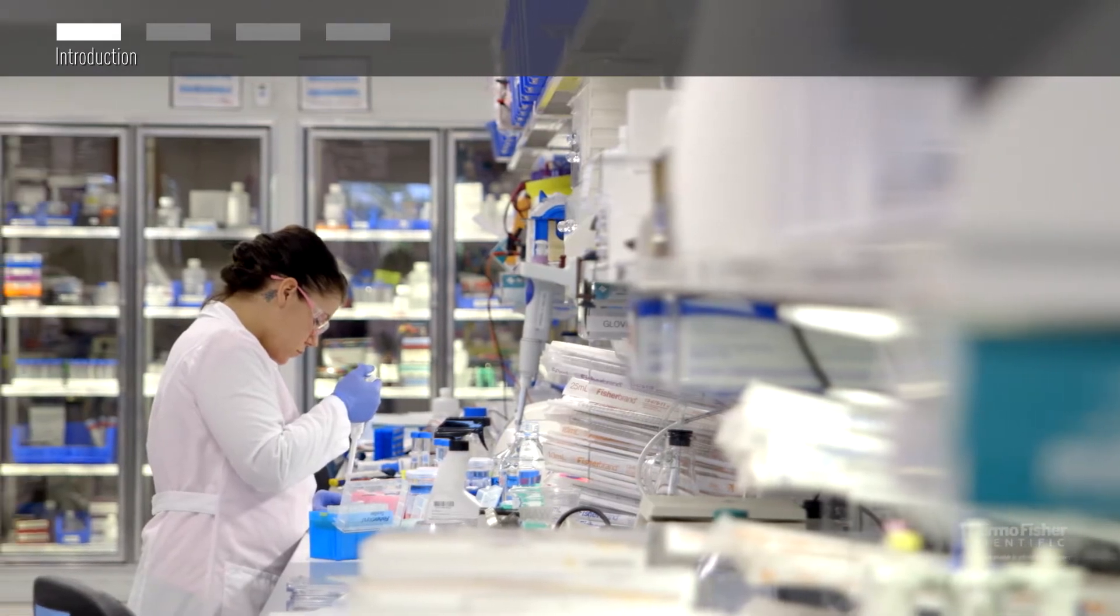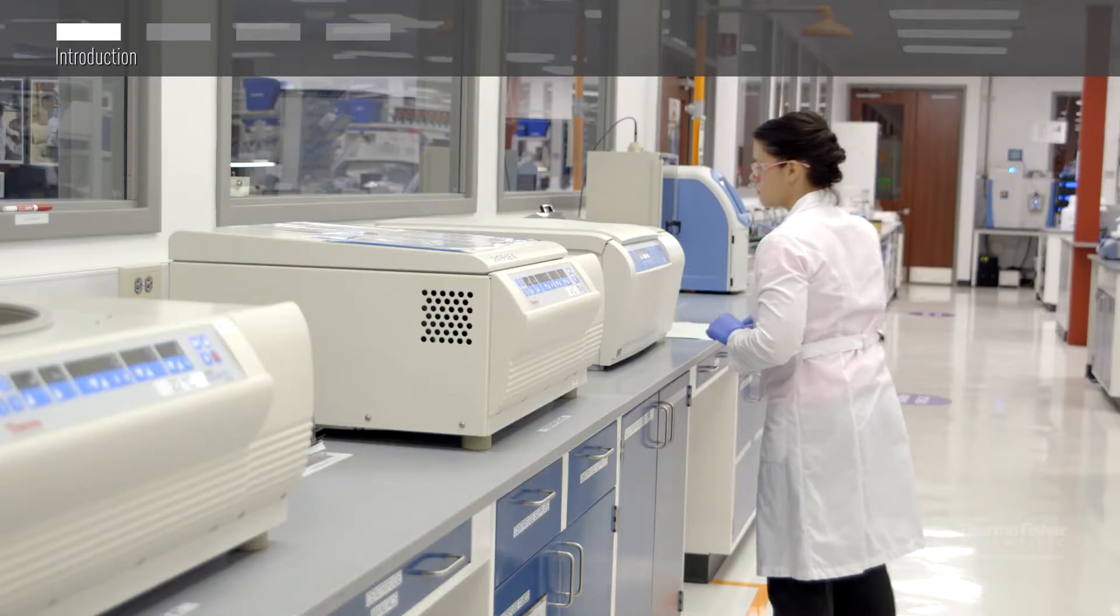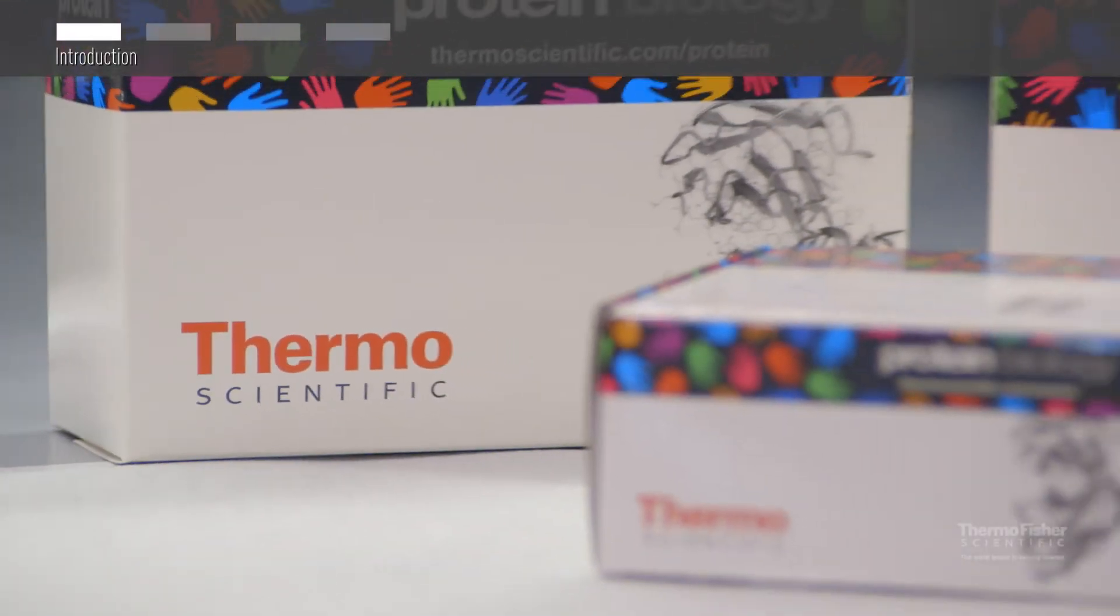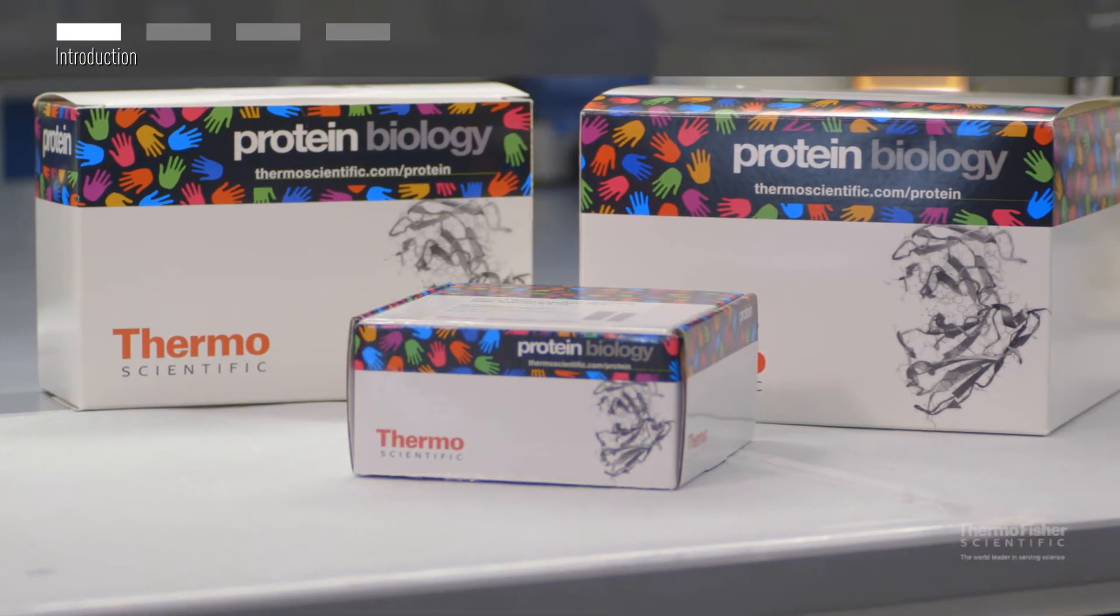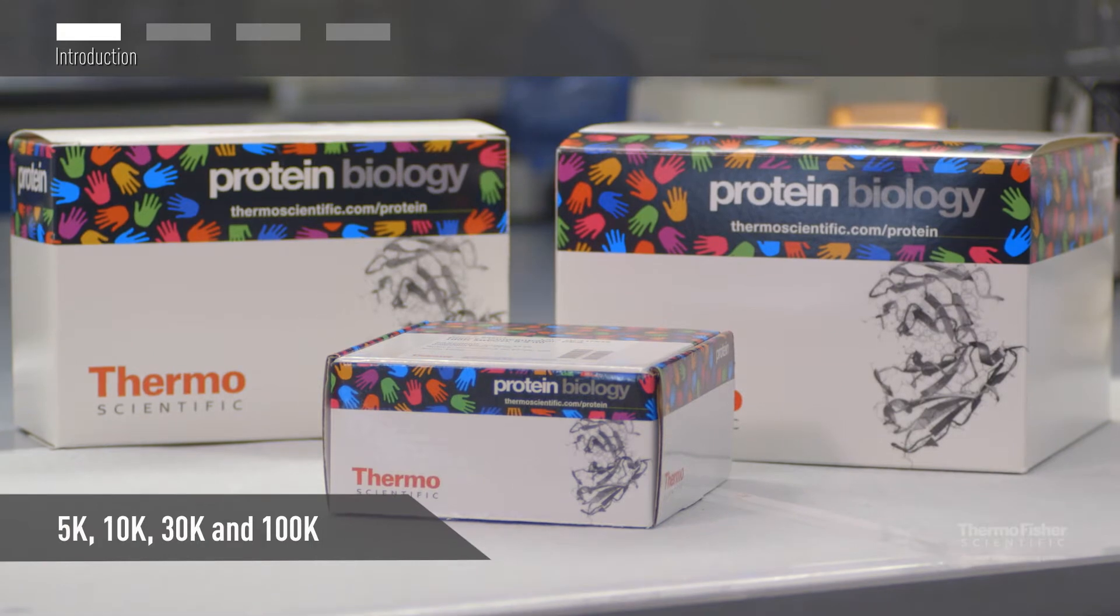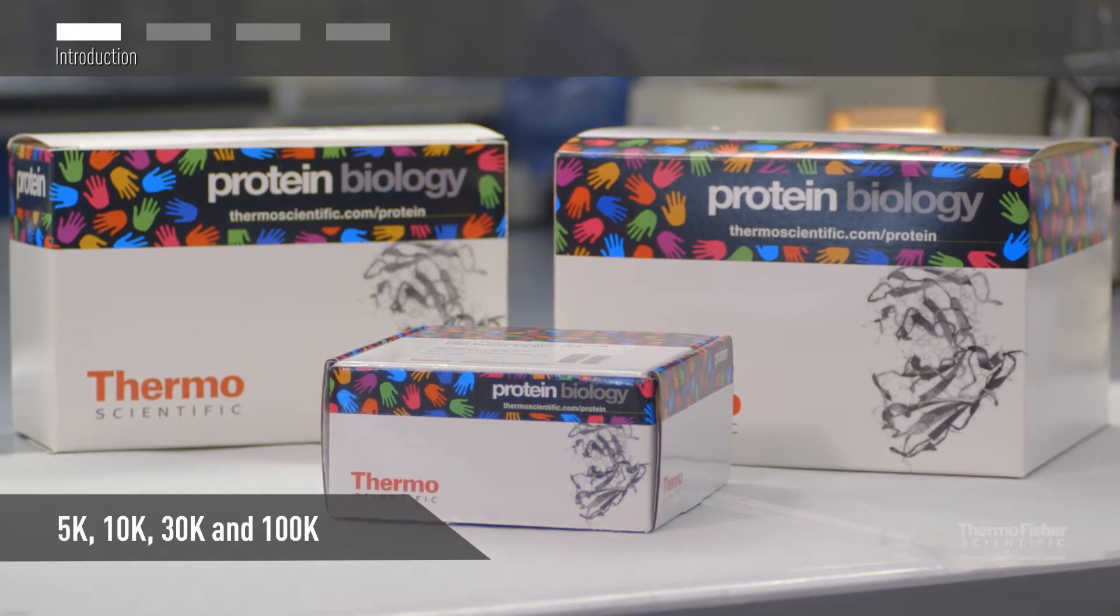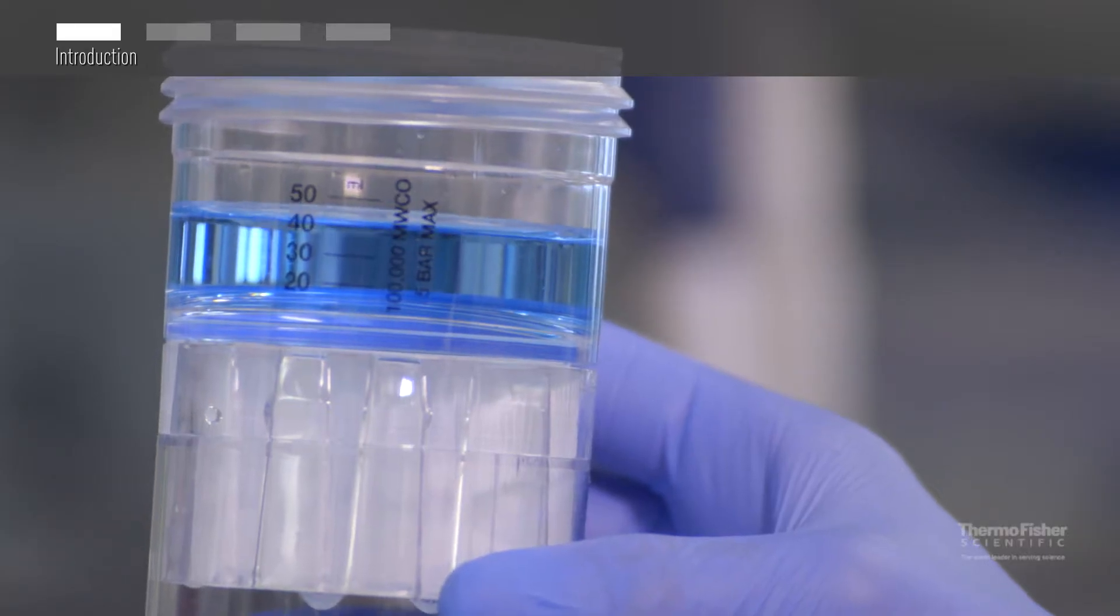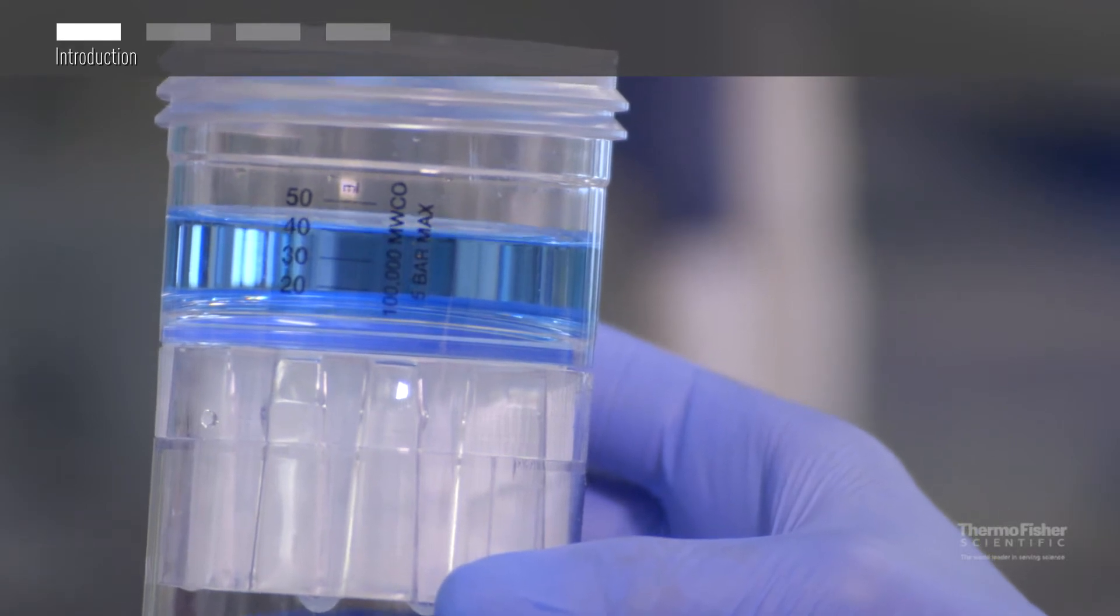These disposable devices are conveniently used in a benchtop centrifuge. They contain polyethersulfone or PES membrane in a variety of molecular weight cutoffs including 5K, 10K, 30K, and 100K. The cutoffs are etched on the side of each device for easy identification.